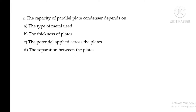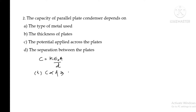This question is about a parallel plate capacitor. What is the capacitance of a parallel plate? Capacitance C is equal to k epsilon-zero A divided by d. This equation is very clear.